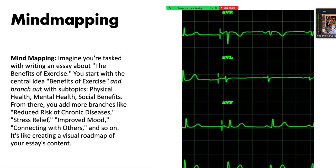Mind mapping. Imagine you're tasked with writing an essay about the benefits of exercise. You start with the central idea — 'benefits of exercise' — and then you branch out. This is very similar to brainstorming and clustering. You branch out with subtopics like physical health, mental health, social benefits, reduced risk of chronic diseases, stress relief, improved mood, connecting with others. It's like creating a visual roadmap of your essay topic.